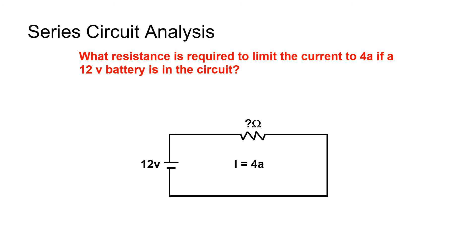What resistance is required to limit the current to 4 amps if a 12-volt battery is in the circuit? Referring to Ohm's Law, resistance equals voltage divided by current. Therefore, resistance equals 12 volts divided by 4 amps, which equals 3 ohms.